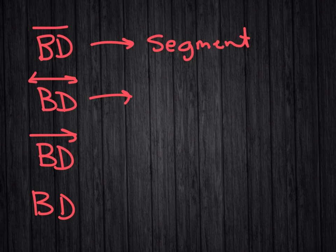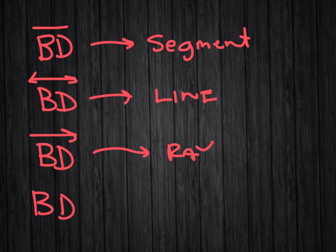So, this notation means segment. I'm sure you can see that in its notation. This one with two arrows means line BD. This one means ray BD, starting at B, heading towards D.